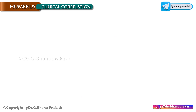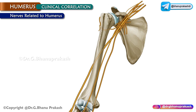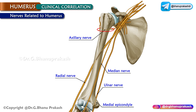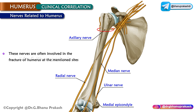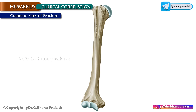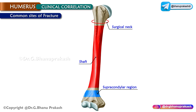Clinical correlation: Nerves related to the humerus are the axillary nerve around the surgical neck, the radial nerve in the radial or spiral groove, and the ulnar nerve behind the medial epicondyle. These nerves are often involved in fractures of the humerus at the mentioned sites. Common sites for fracture of the humerus are the surgical neck, shaft, and the supracondylar region.